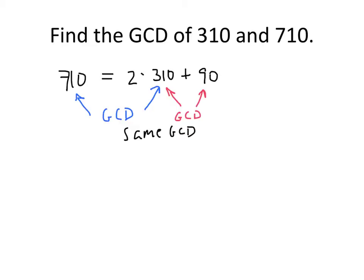So that means that we can repeat this process. We're going to divide 310 by 90 and figure out a quotient and a remainder. And we're going to keep doing that until we get to a point where it makes sense to stop. So 90 goes into 310 three times, remainder 40.